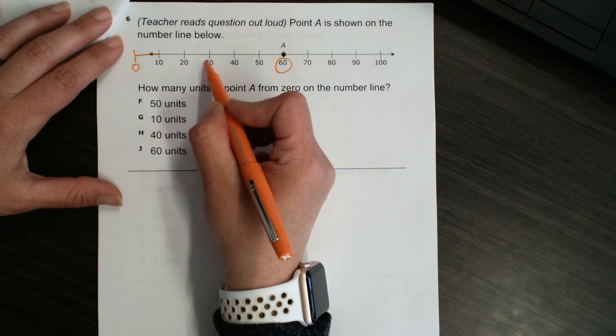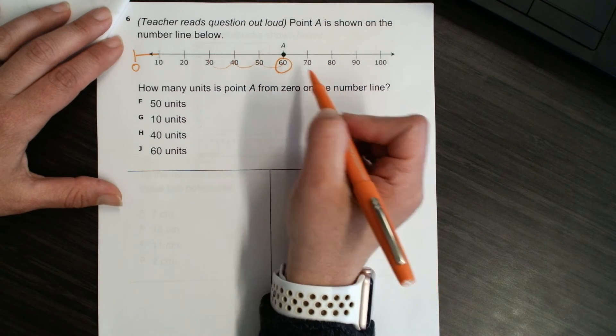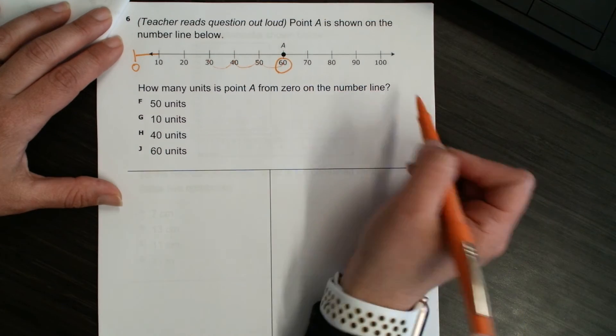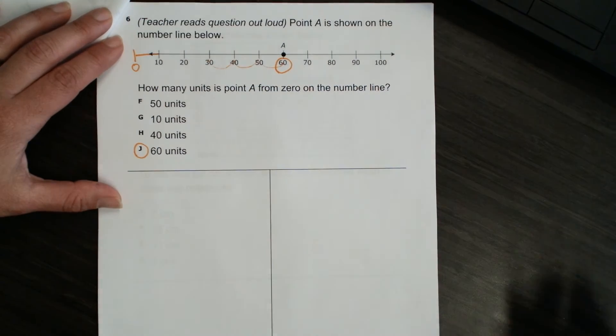I would say 10, 20, 30, 40, 50, 60. So, at 60, it is 60 units from 0 on the number line.